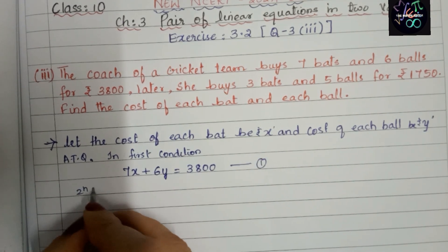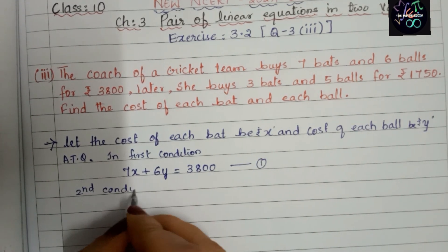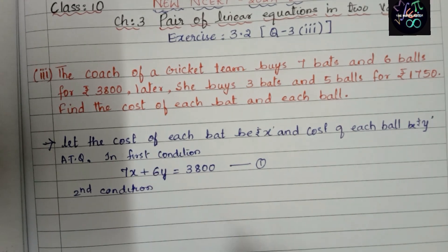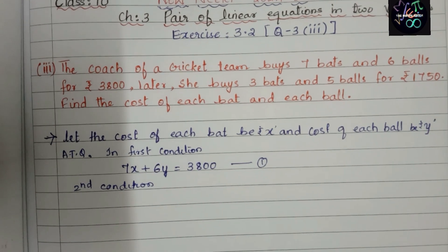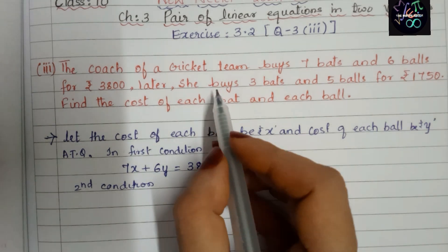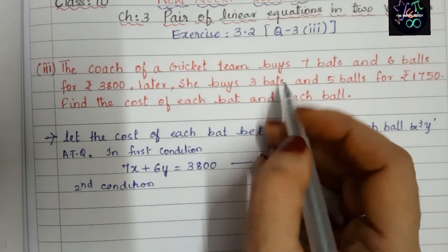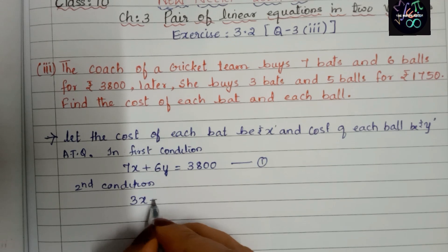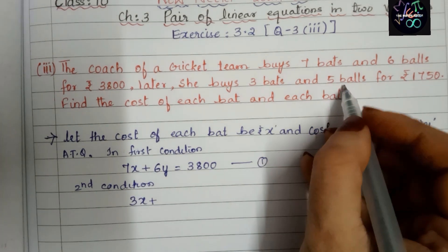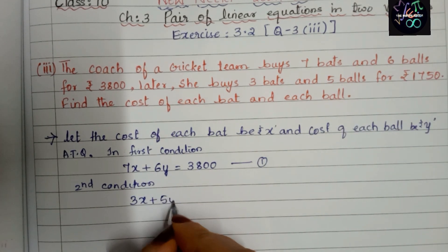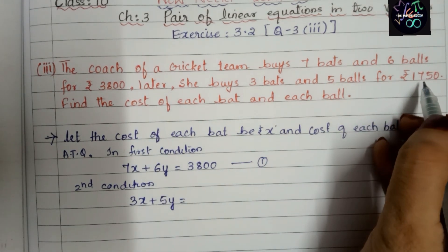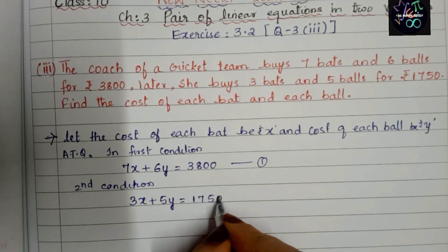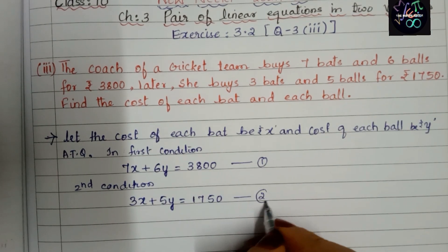This is a pair of linear equations, so we will have two conditions and two equations. The second condition: she buys three bats (3x) and five balls (5y) for rupees one thousand seven hundred and fifty. So: 3x + 5y = 1750. This is Equation 2.